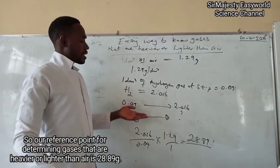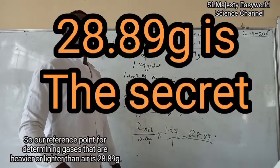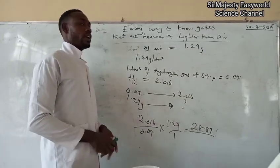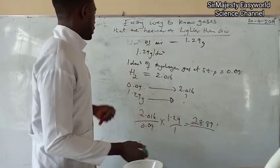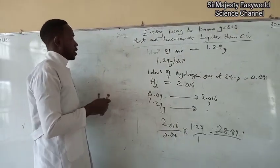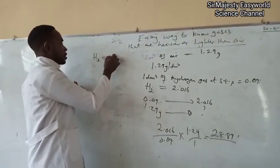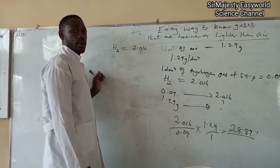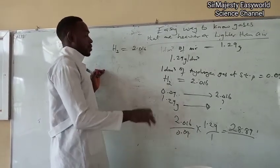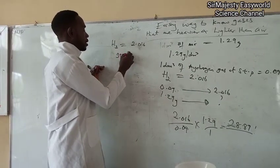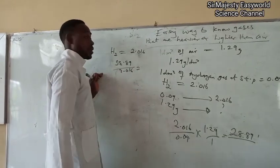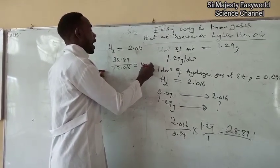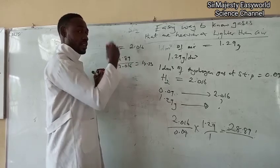Now with this, it is easy now. Any gas that the molar mass is less than this figure, 28.9, is lighter than air. Then any gas that the molar mass is higher than this figure is heavier than air. So to put it in practice, we have, for example, like hydrogen gas is the slightest, which is 2.01 gram. So this 2.01 is far less than 28.89. So hydrogen gas is lighter than air. For you to know how many times, you use the weight of air divided by the weight of the gas. Which will give us 14.33. So, hydrogen gas is 14.33 times lighter than air.